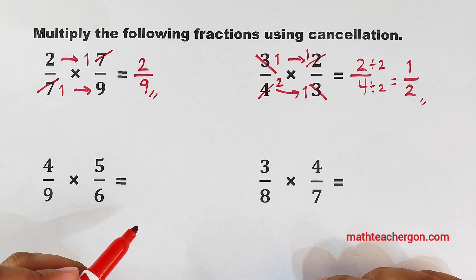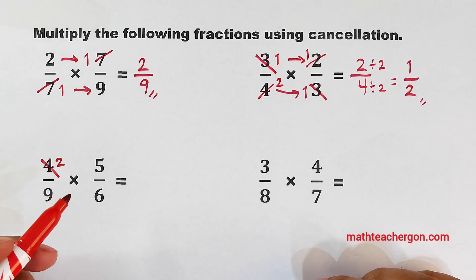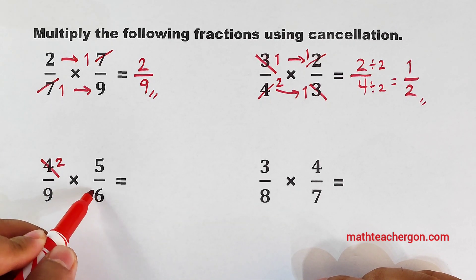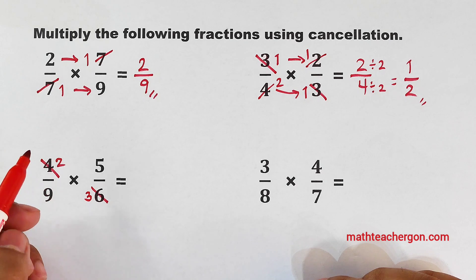Their greatest common factor is 2. So you will think, how many 2's do we have in 4? To cancel this out, we have 2 2's here. Here in the denominator, we have 3 2's. So we can cancel this 6. It will become 3. And in this case, we can multiply.